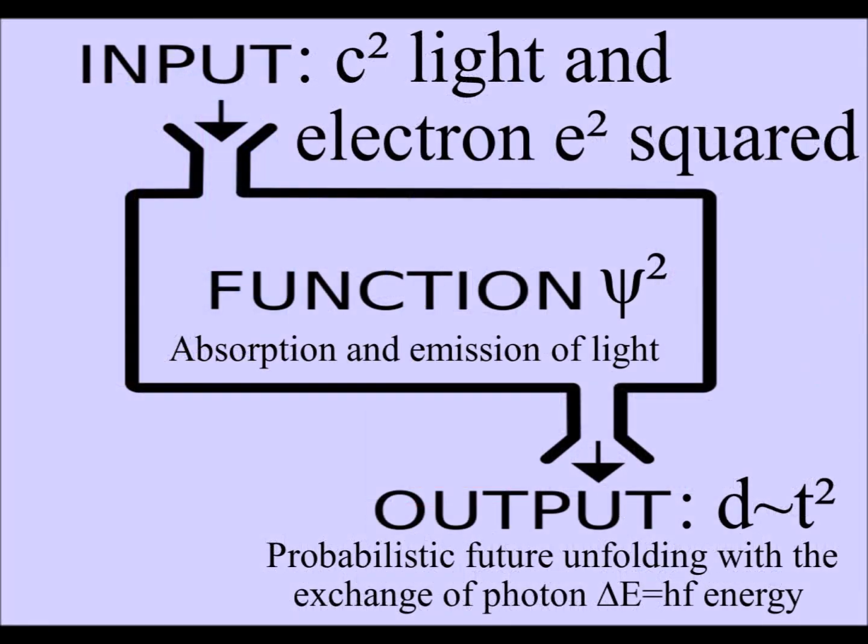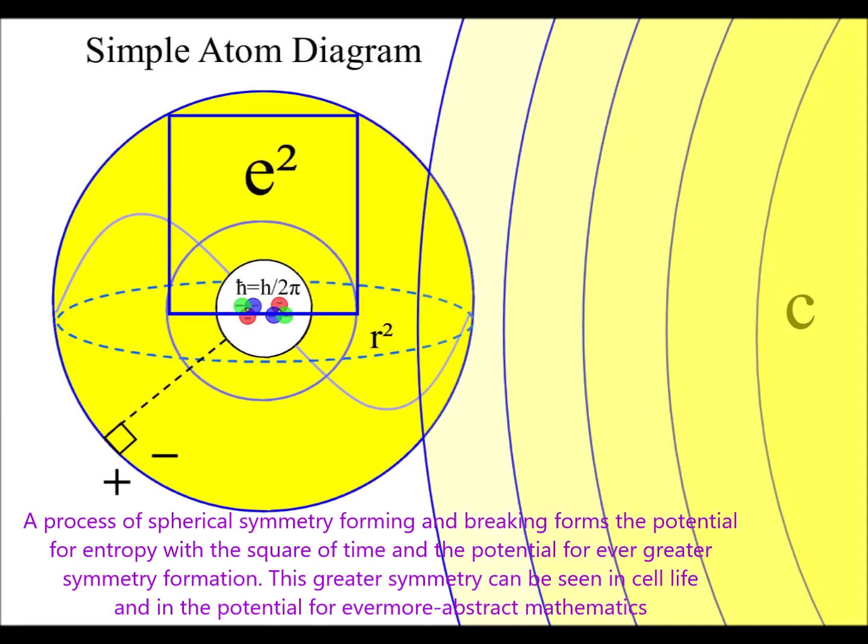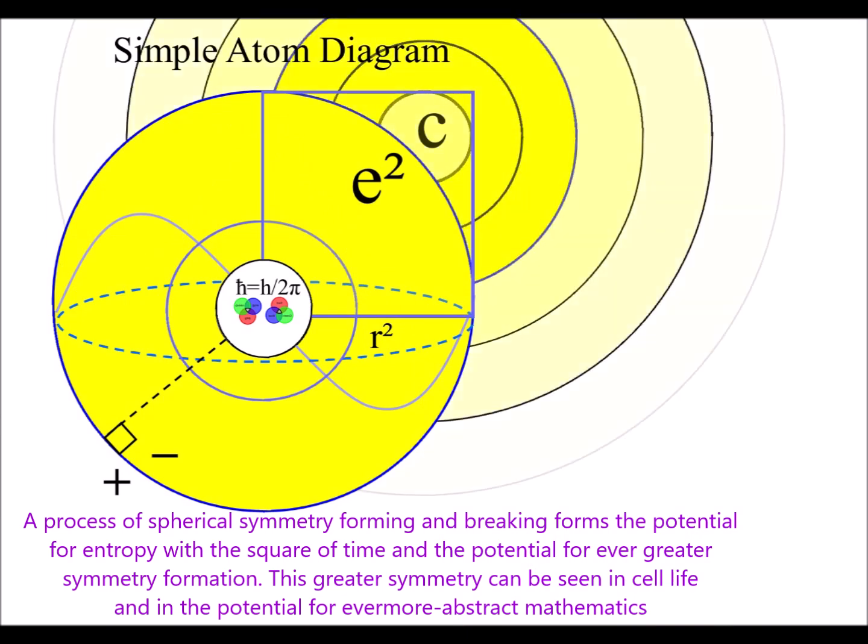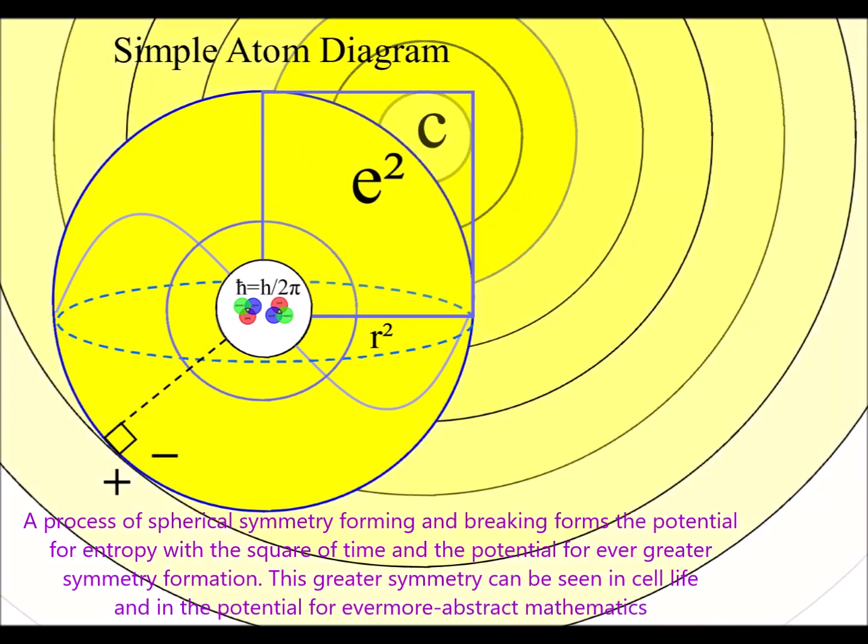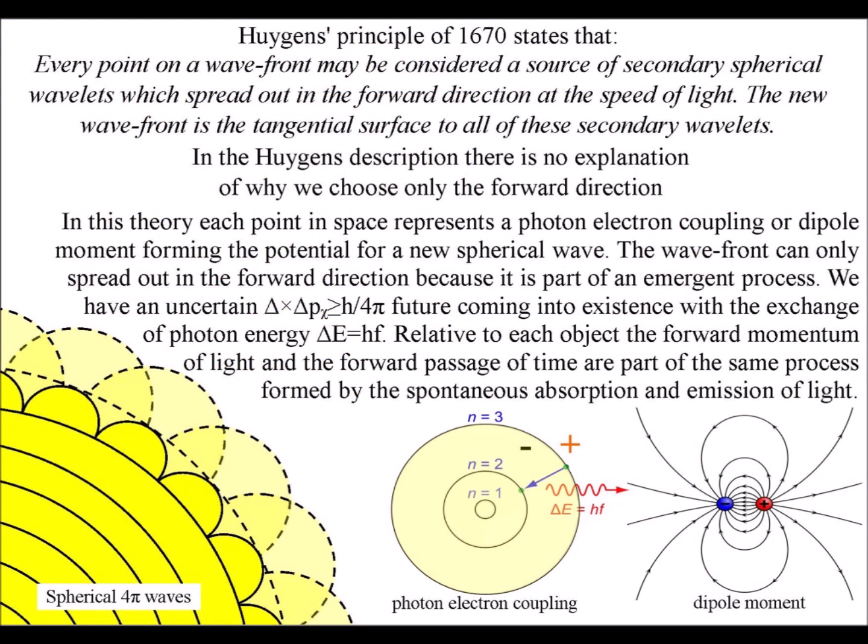In this theory, the square of time that Galileo found by experiment originates as a square of probability in quantum mechanics. We have a geometrical process that starts with the quantum wave particle function being squared, with the electron squared, and with the speed of light being squared, and ends with falling bodies being directly proportional to the square of the time they take to fall.